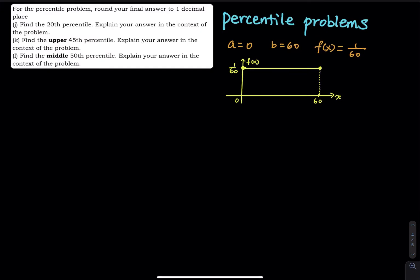This video is the continuation of the previous two videos. The problem states that a student can answer a quiz question in 60 seconds and the time follows a uniform distribution, so the minimum is 0, the maximum is 60, and the PDF is 1 divided by 60 minus 0. In this video I want to talk about how to answer percentile problems.